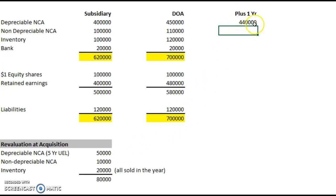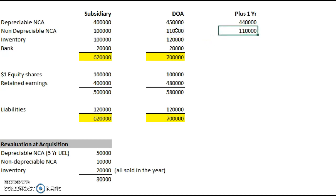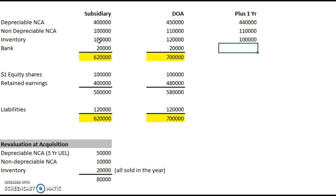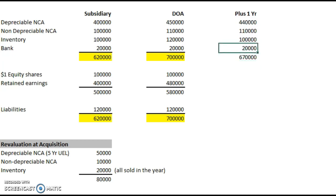We've lost some to depreciation, and that will happen every year for the next four further years. The non-depreciable non-current assets stay the same unless there's an independent revaluation, adjustment, or impairment — so no further adjustment is needed there. As for inventory, we've sold all of it during the year, so we don't need to include that adjustment again. Assuming no other movement in the business over the year, we remove the inventory adjustment, giving us a new total assets figure of 670,000.